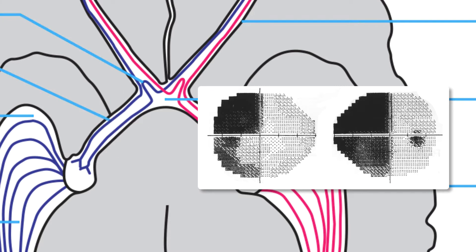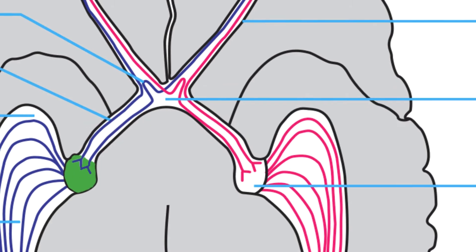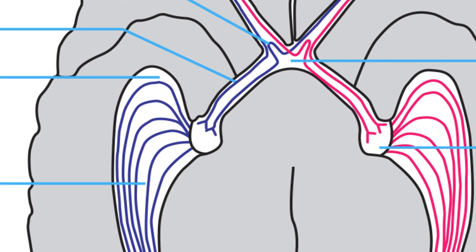The term used to describe these non-overlapping defects is incongruous homonymous hemianopia. Incomplete homonymous hemianopias of optic tract lesions are so incongruous because at this stage, the axons from corresponding retinal areas have not yet come to lie adjacent to one another.